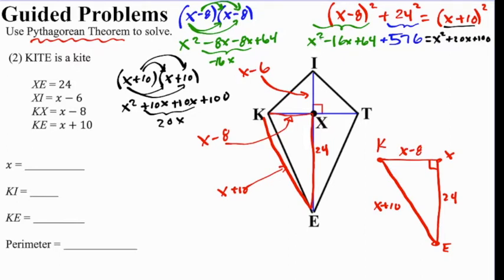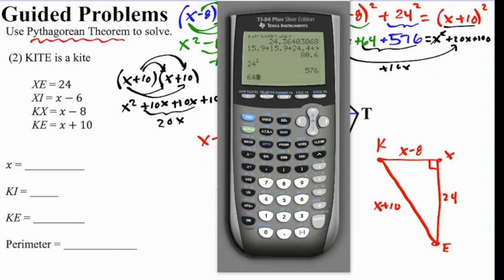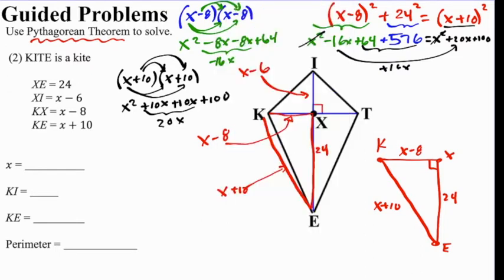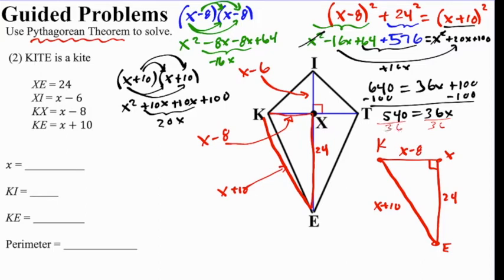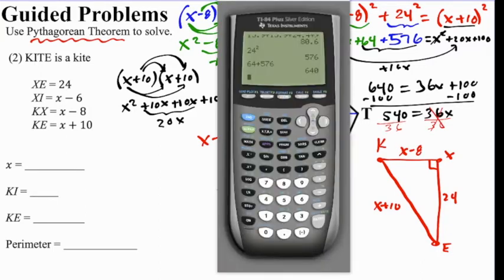So now we can combine like terms. If I subtract x squared from both sides, they're going to cancel. And I'll bring the negative 16x to the other side by adding 16x to both sides. And we see that 64 plus 576 can be combined. 64 plus 576 gives us 640. So now we have 640 is the only thing left on this left-hand side equals, just plus 16x and 20x gives us 36x, and then we have plus 100. So now we're going to subtract the 100 from both sides. We have 540 equals 36x. Let's divide both sides by 36.